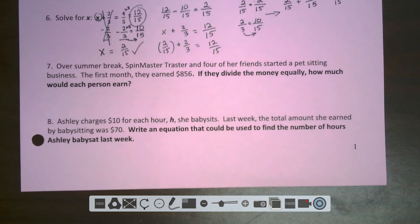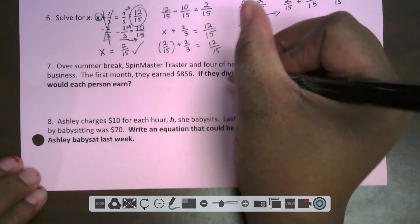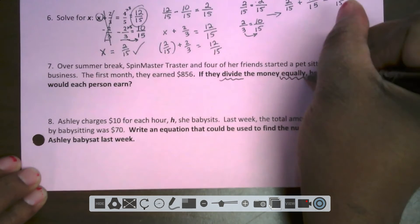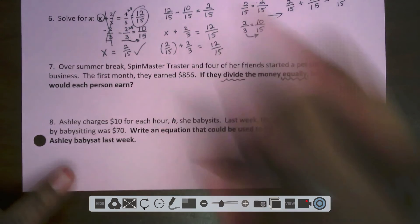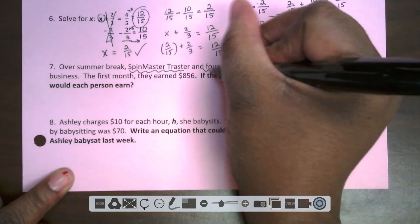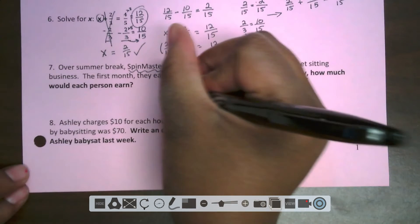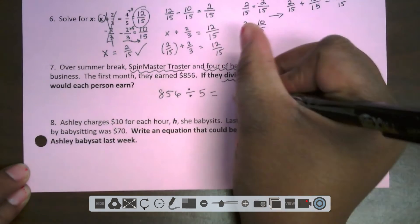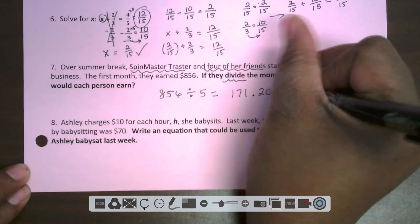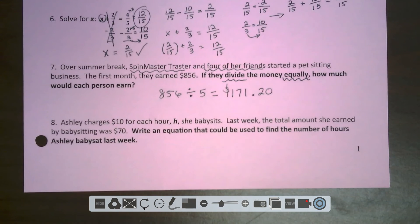Number seven. Over summer break, spin master Traster and four of her friends started a pet sitting business. The first month they earned $856. If they divide the money equally, how much would each person earn? Dividing tells me equally. So spin master Traster is one plus the four of her friends, total of five people. So this is simply $856 divided by five. I'm going to pop that into the calculator and I get 171.20. So it's 171 dollars and 20 cents each. Not bad.